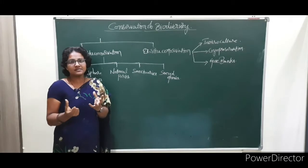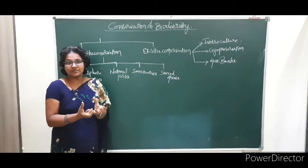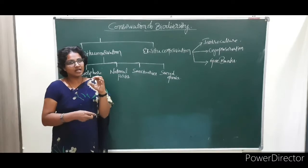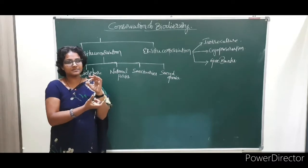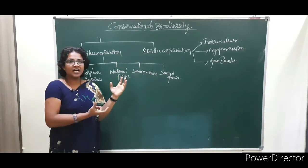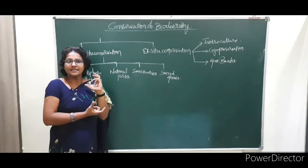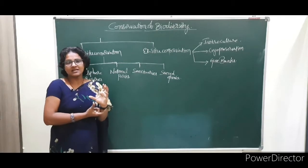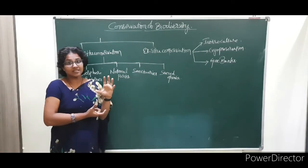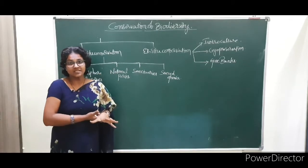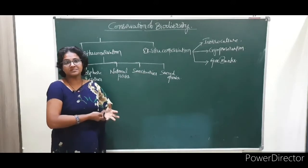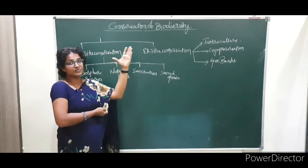Here we see different animals which are under threat. There are vulnerable species and endangered species — those that are close to extinction. There are also species under harm due to human disturbances. Because of human disturbances, biodiversity is disturbed, and animals in danger require conservation; otherwise they lead to extinction.